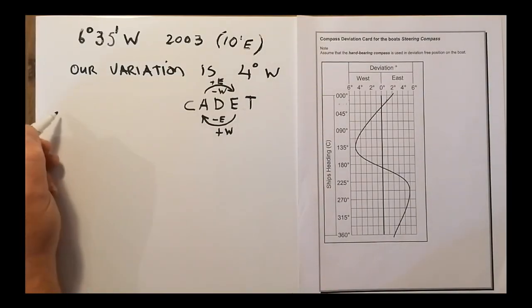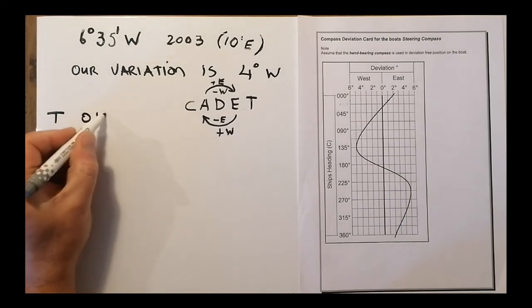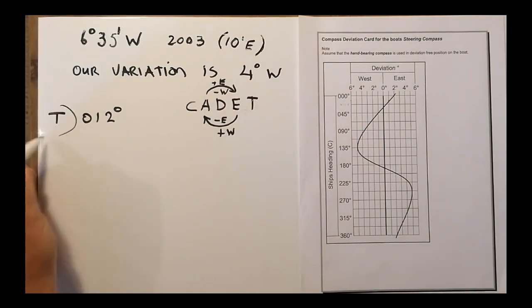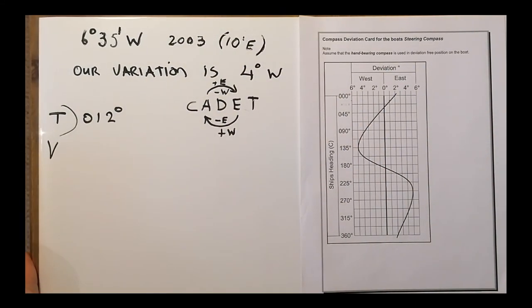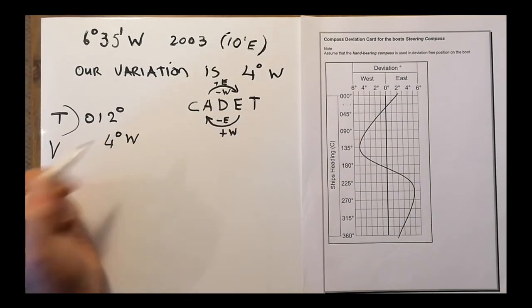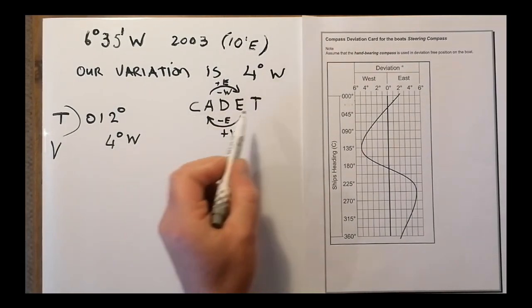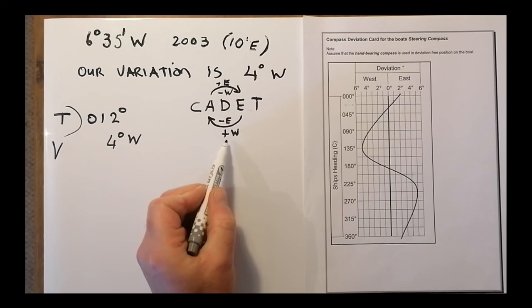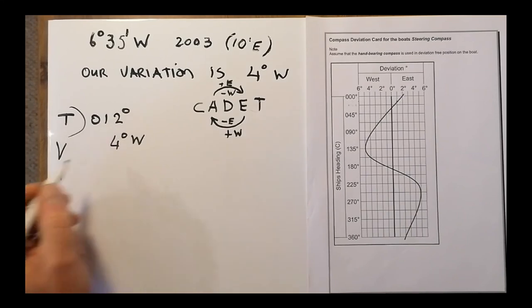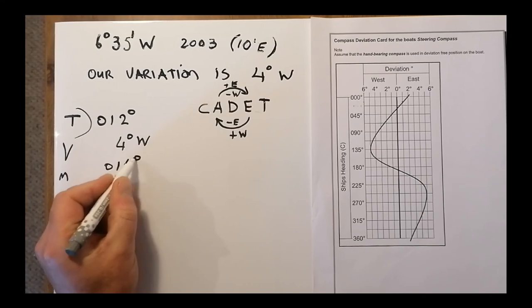So, I now have a true reading from my chart of 012 degrees. The first thing I need to allow for is my variation. So our variation is 4 degrees to the west. And what does it tell me now: this time I'm going from true to compass, I need to add the west. So now my mag is now 016 degrees.